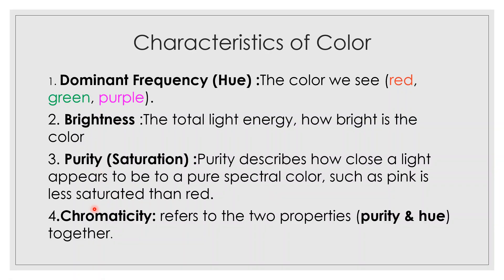The third characteristic is chromaticity. Chromaticity means color information. It has two properties: purity and hue. Hue describes what the actual color is, and purity — or saturation — describes the varieties. Together, hue and saturation form chromaticity, which represents complete color information.